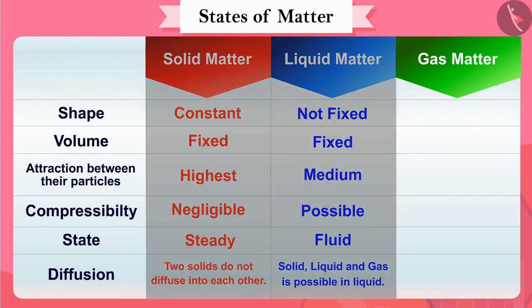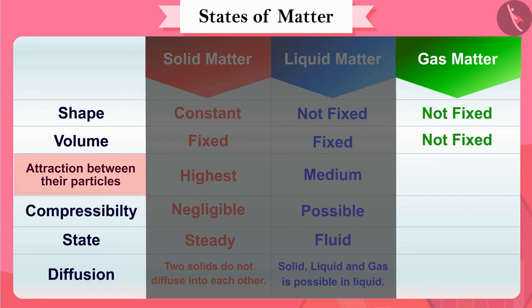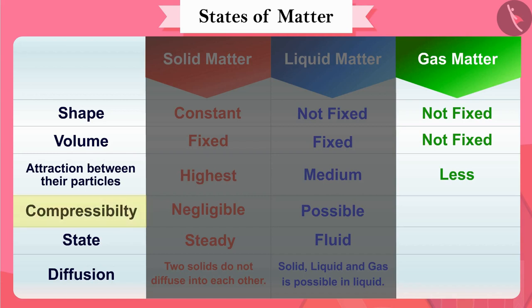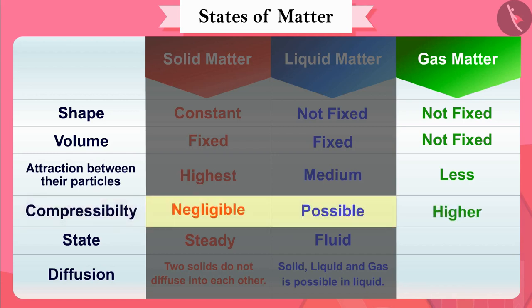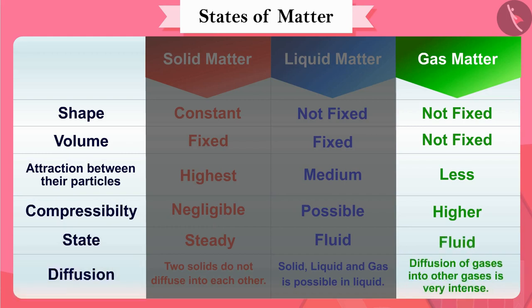As we have seen, the shape and volume of gaseous matter are not fixed. The attraction between particles of gaseous matter is less than that of solid and liquid. Because particles of gaseous matter have more space, the compressibility of gaseous matter is much higher than that of solids and liquids. Even in the gaseous state, the substance is not rigid but fluid, and diffusion of gases into other gases is very intense.